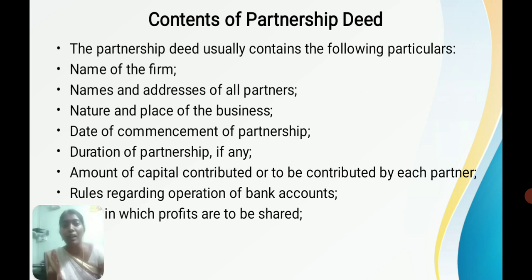Next, we will see what are the contents involved in a partnership deed. First of all, the name of the firm — all firms should have their own name, and that is the first content of the partnership deed. Next, the names and addresses of all the partners involved are mentioned. Next, the nature and place where the business is located is also entered. Then the date of commencement — that is, the date on which the partnership started — is also mentioned.